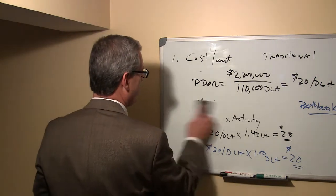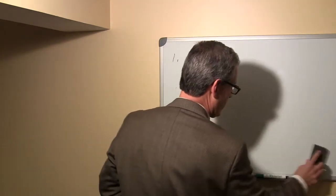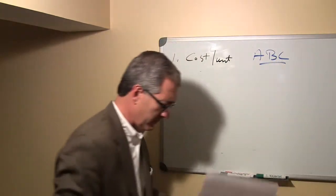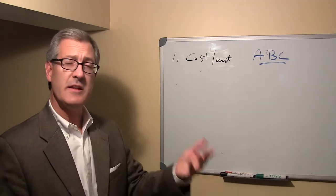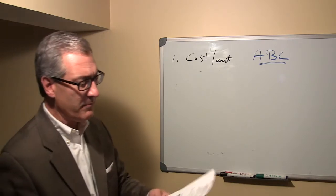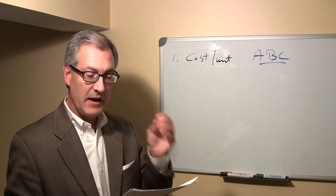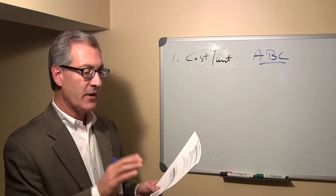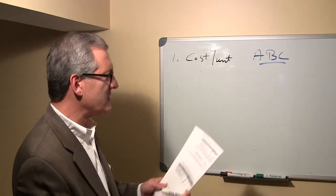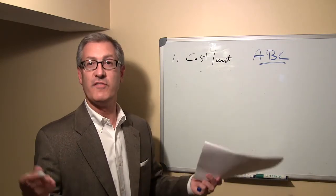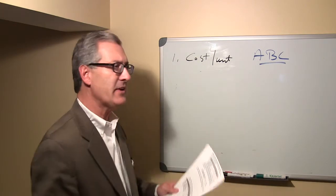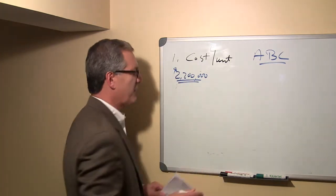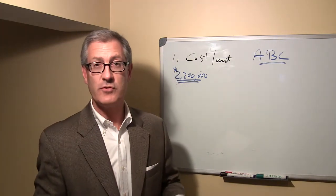Now let's look at the second part of the problem: calculating cost per unit using activity-based costing, ABC. In the problem, I'm giving you four activities, the estimated cost for each of those cost pools, and the expected activity for X-Active and PathBreaker. What you want to remember is you are essentially calculating four activity rates — or four predetermined overhead rates — one for each activity. The total manufacturing overhead is $2.2 million, and the four cost pools add up to $2,200,000.